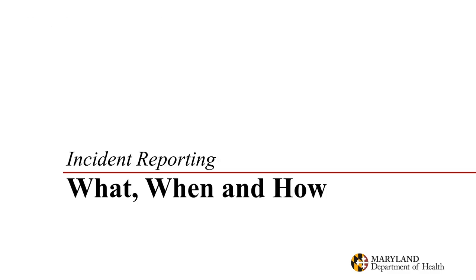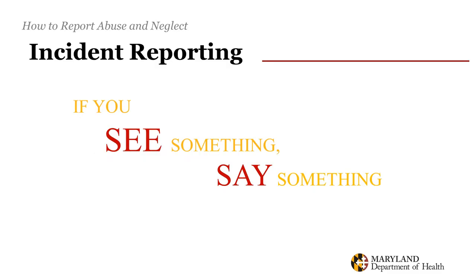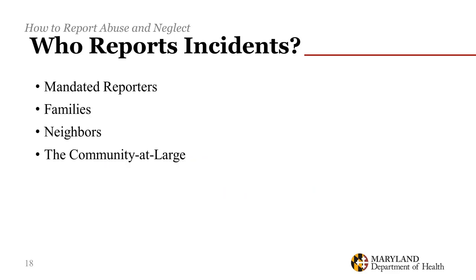Now we will talk about the reporting process. As a reminder: if you see something, say something. A number of people can report incidents, including mandated reporters, who are all professionals including health practitioners, police officers, educators, and human service workers who have reason to believe that abuse or neglect of a child or a vulnerable adult has taken place. Reporters also include family members, neighbors, and the community at large.